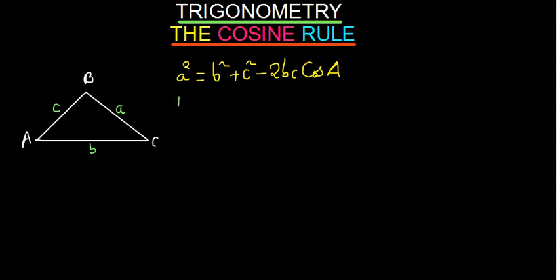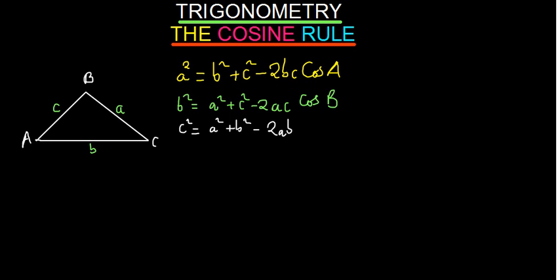You can also write it in terms of B: B squared is going to be equal to A squared plus C squared minus two AC, and then cos B. You can also say C squared is equal to A squared plus B squared minus two AB, and then cos C. So this is what is called the cosine rule. It is used when you have been given two sides and the angle between them and they ask you to find the other side, or when they give you all the sides and ask you to find the angles.